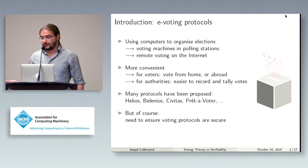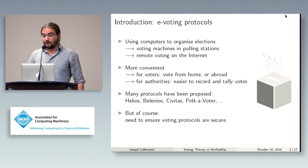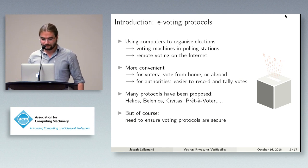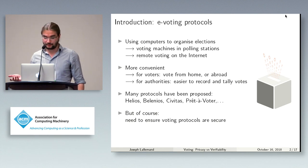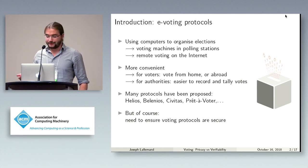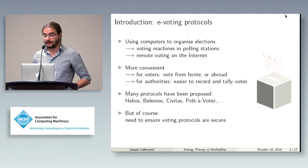Electronic voting has several advantages. It's more convenient, both for voters who can vote from their home or from anywhere without having to go to the polling station, and for authorities, because it's easier to record and tally all the votes. Many protocols have been proposed to organize elections this way, such as Helios, Belenios, and Civitas. But as always with cryptographic protocols, there is the need to ensure that they are actually secure.